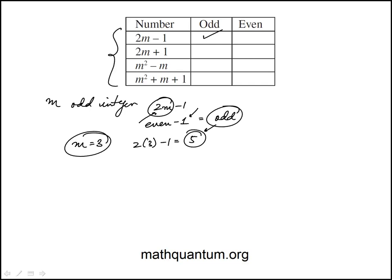Same thing: 2m plus 1. Again, 2m is even, plus 1 is odd. You can also do m is 3, this would be 2 times 3 plus 1, 6 plus 1 is 7.